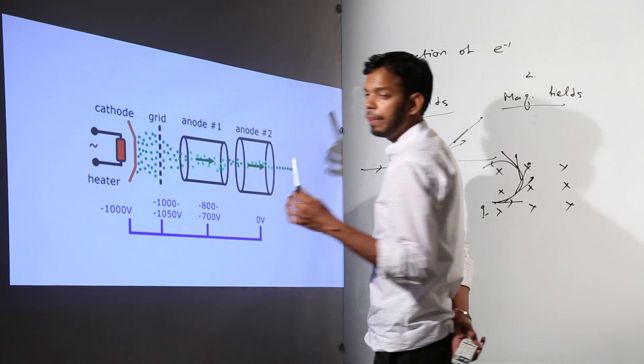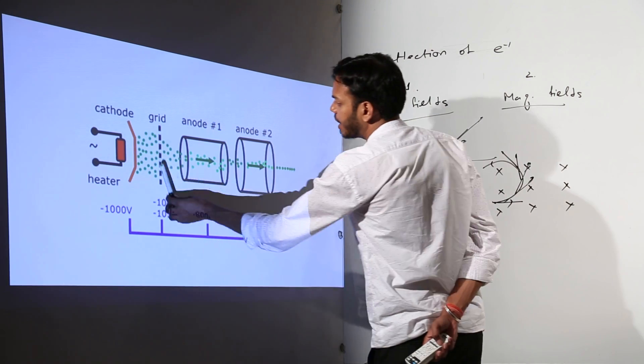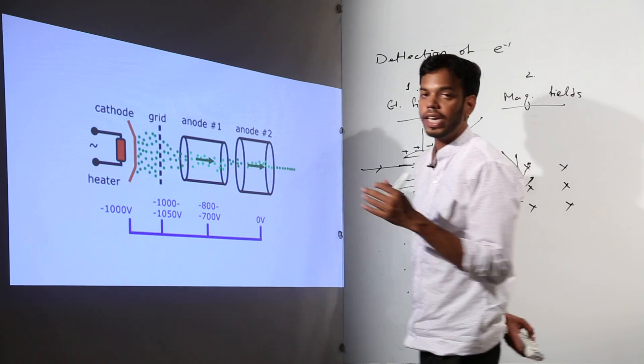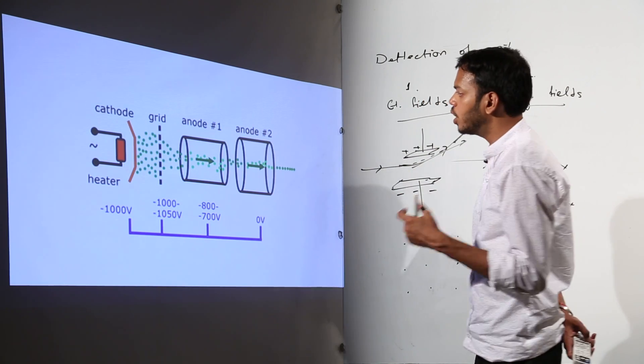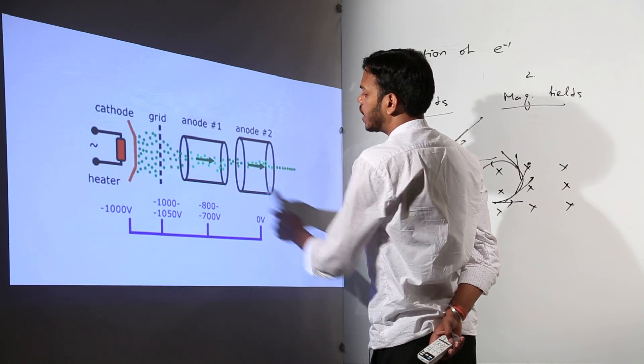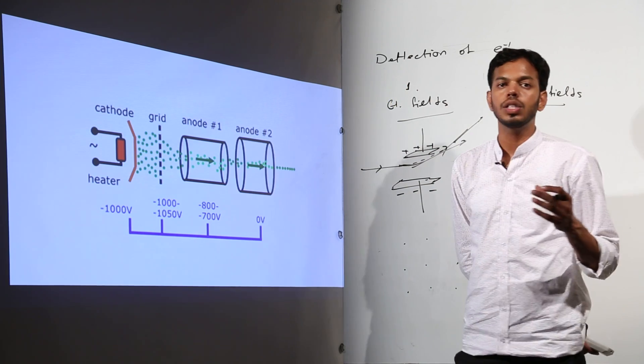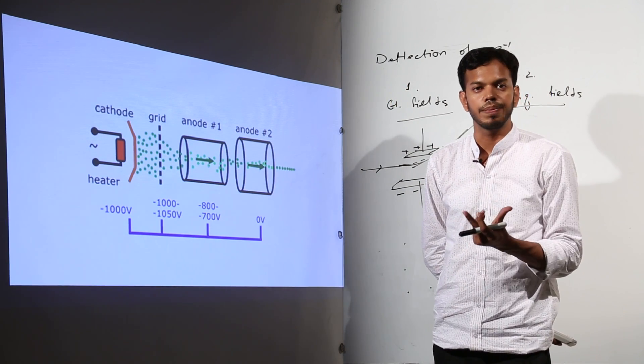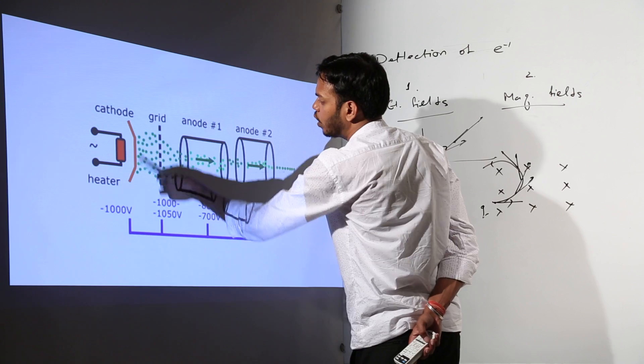So electrons are emerging out randomly from the grid but after passing through grid they are following some pattern because of these voltages. So that is how, see, these electrons were streamlined in one direction but they were ejecting out in various directions.